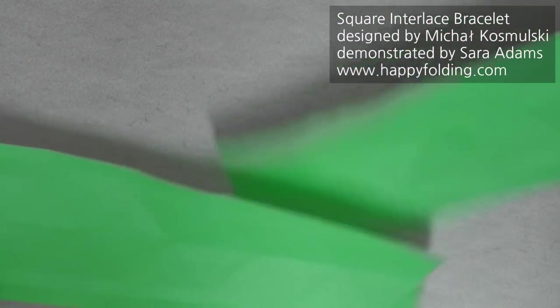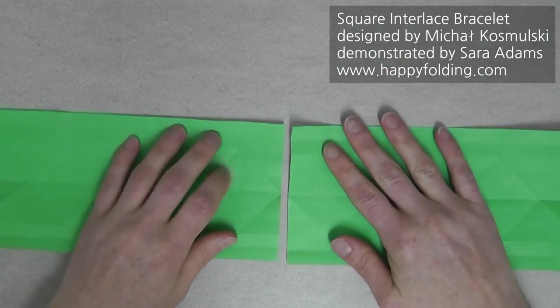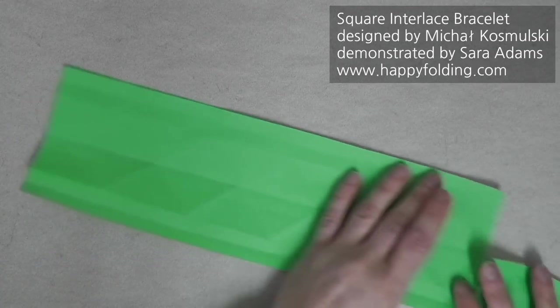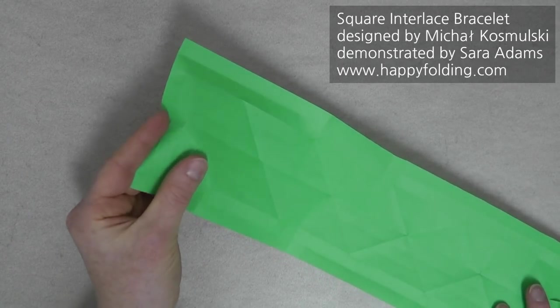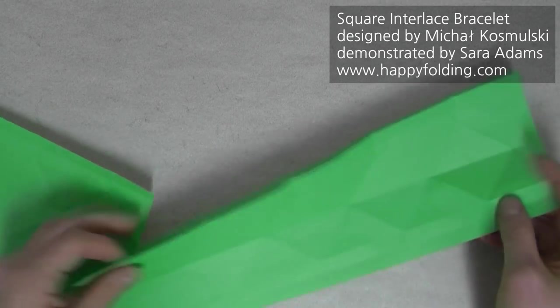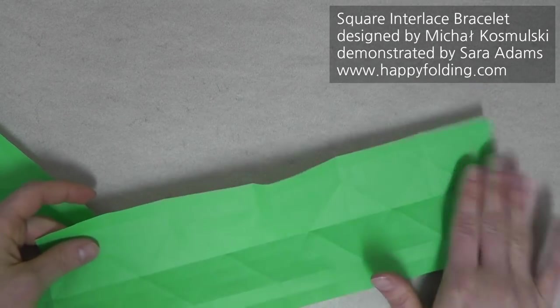Now, at this point, I'm going to tape these two strips together, like this, so you can see the two extra squares here, which is the overlap to close the bracelet, are on the edges.